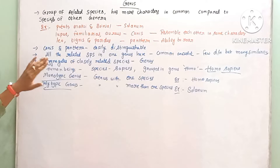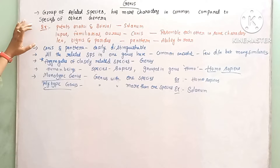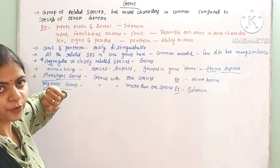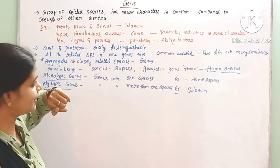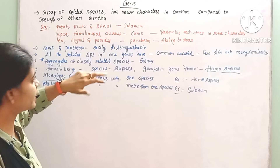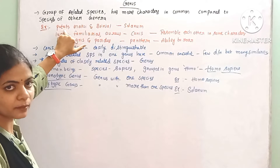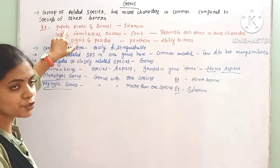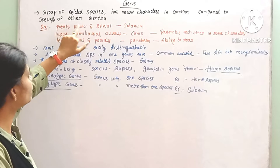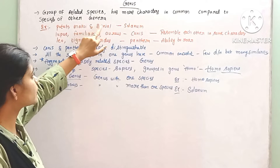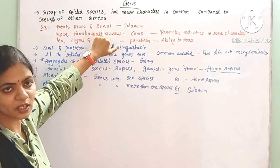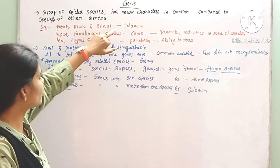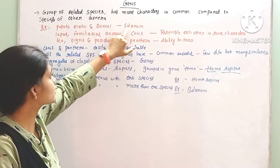For example, we have a lot of species in Solanum — like potato (Solanum tuberosum), Solanum nigrum, brinjal (Solanum melongena). So there are different species in one genus.